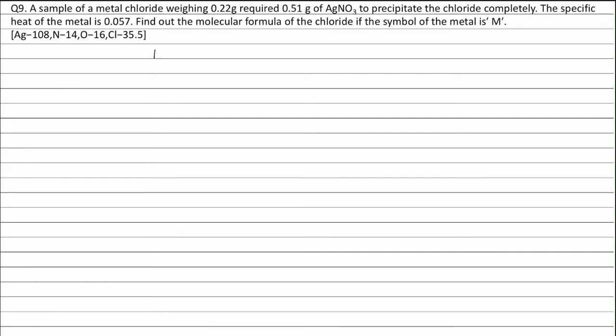Let the valency of metal be X. Valency of chlorine is 1. Therefore, interchanging the valencies, the molecular formula of the chloride can be written as MClX. Atomic weight into specific heat is equal to 6.4.